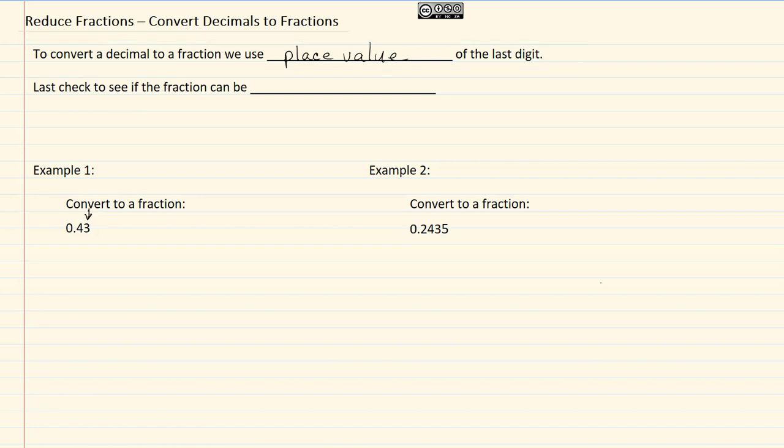Then we check to see if the fraction can be reduced. You can tell if the fraction needs to be reduced if it's divisible by two or five. Those are the only things we need to look for because of the place value.